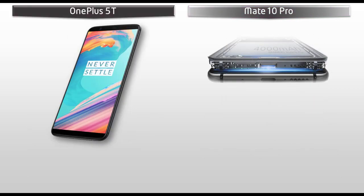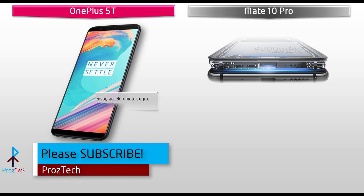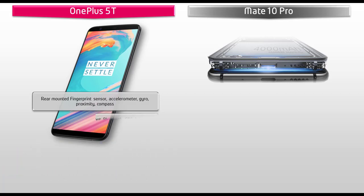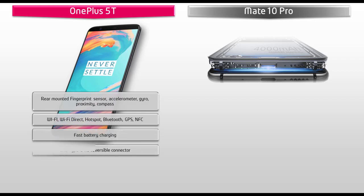The OnePlus 5T comes with a rear-mounted fingerprint scanner with accelerometer, proximity, compass, gyro, Wi-Fi, Wi-Fi Direct, DLNA, hotspot, GPS, Bluetooth, NFC, fast battery charging with 5V port, Dash Charger, and a Type-C reversible connector. What you will not find in this device is an infrared port and FM radio. This phone is equipped with a non-removable 3300 mAh battery.